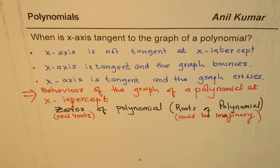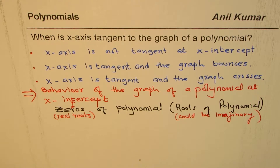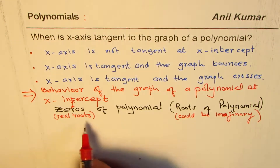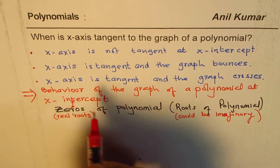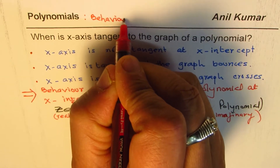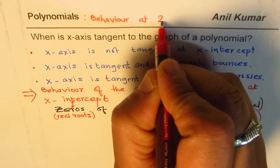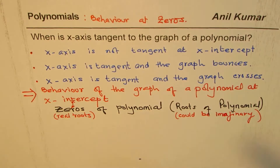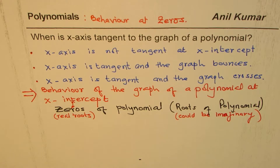Zeros are represented as x-intercepts when we graph the equation of any function. In this case we are talking about polynomials. So the topic we are discussing is: polynomials and behavior at zeros.